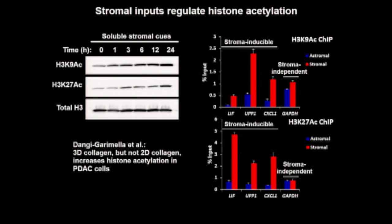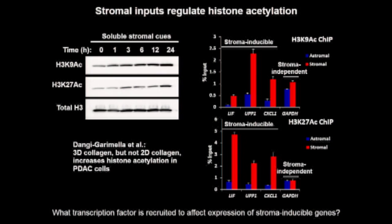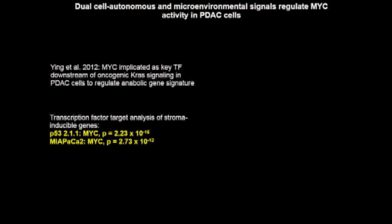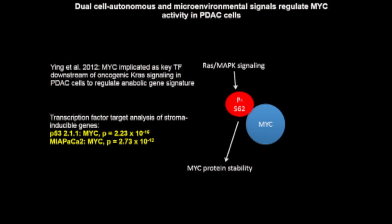I next wanted to determine which transcription factor is recruited to drive induced expression of stroma-inducible genes. I was drawn to MYC early on, given that the earlier paper implicated MYC as the key transcription factor downstream of oncogenic KRAS driving transcription of this anabolic gene program. I also saw that MYC binding sites were enriched in promoter regions of the stroma-inducible genes from my RNA-seq dataset. In KRAS mutant cancer cells, MYC is typically phosphorylated on serine-62, stabilizing it, so I thought maybe stromal signals do something else to regulate MYC beyond its phosphorylation and expression.